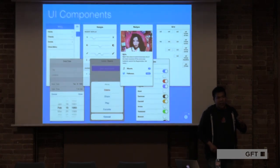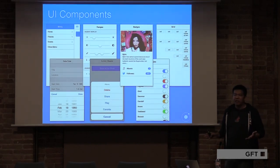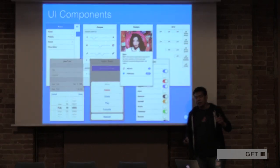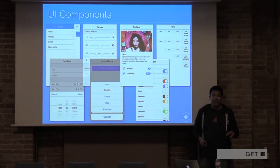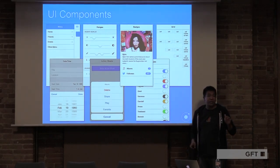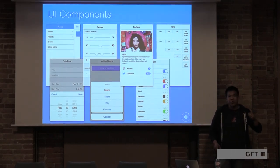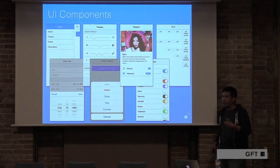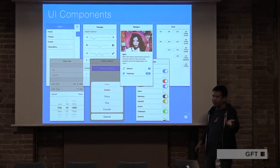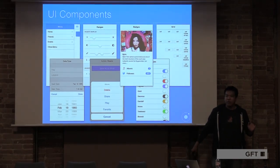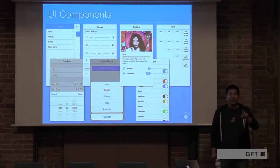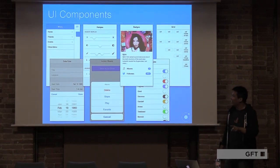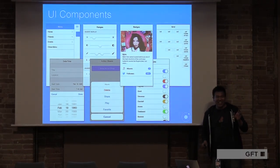In Ionic 2, all of the UI components also conform much more tightly to the platform-specific style guides for each platform. So when you use Ionic on iOS, the components are going to look like iOS components. When you use it on Android, they're going to look like Android — material design — components. And we also have a Windows Universal theme as well.